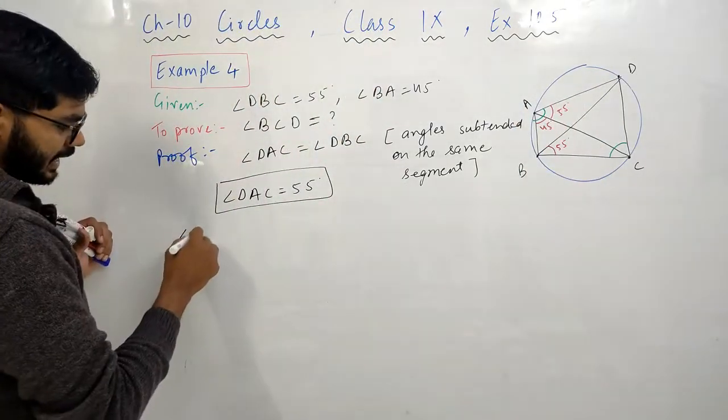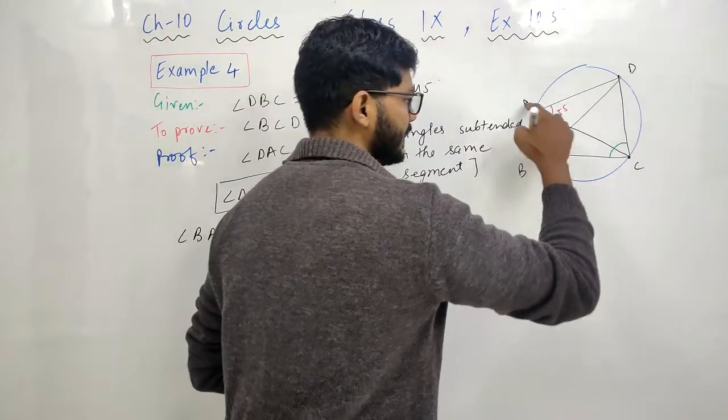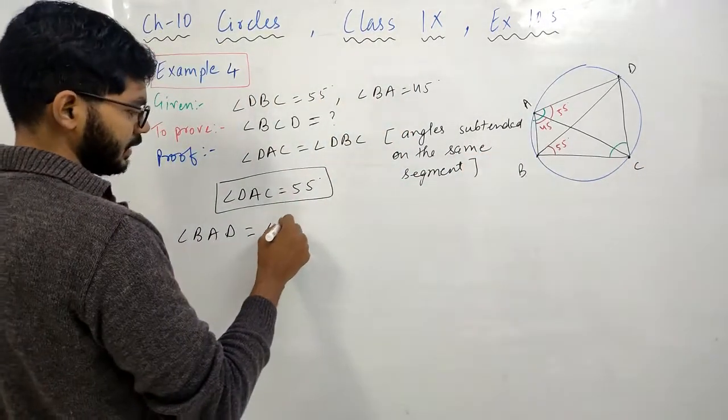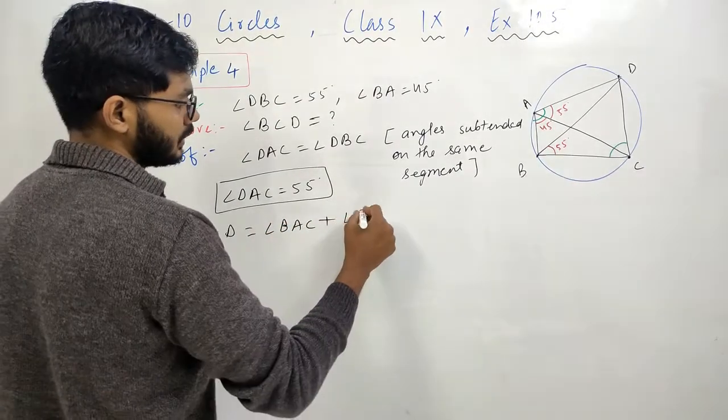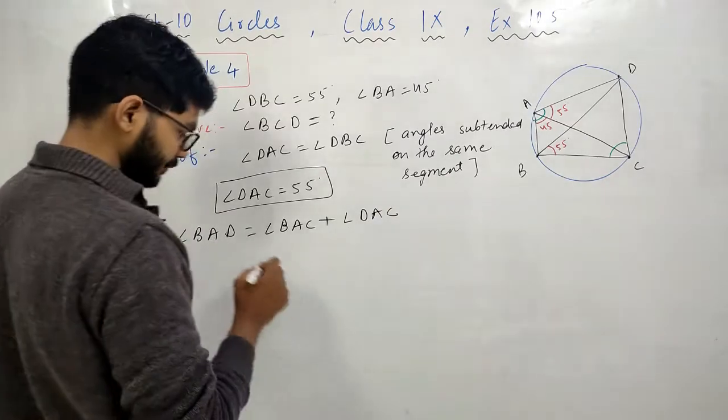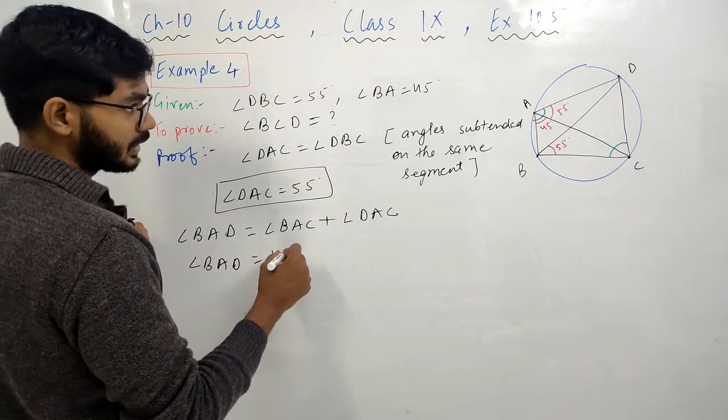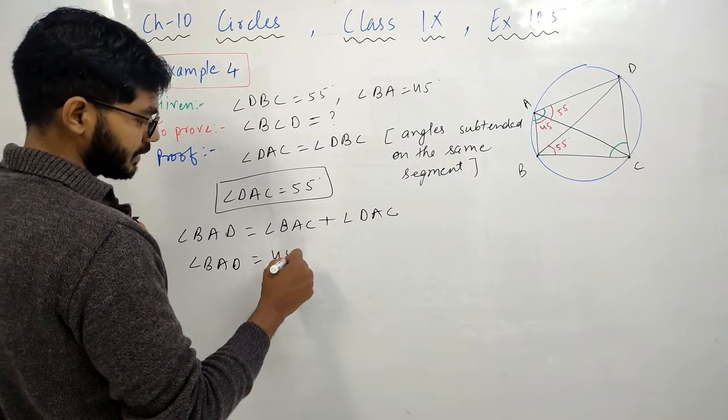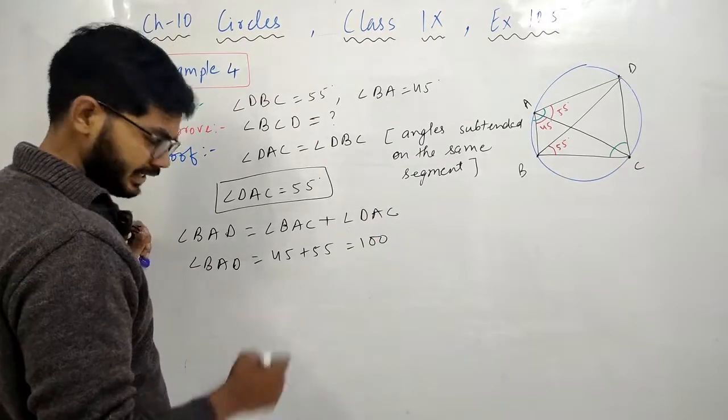तो पहले BAD निकाल लेते हैं. Angle BAD कैसे मिलेगा? अगर मैं BAC में angle BAC में क्या add कर दूं? DAC. तो angle BAD कितना आ गया? 45 plus 55 which is 100 degree. ठीक है?